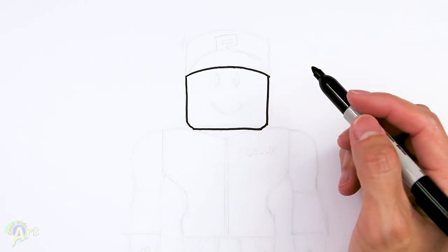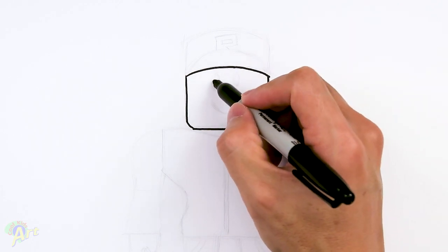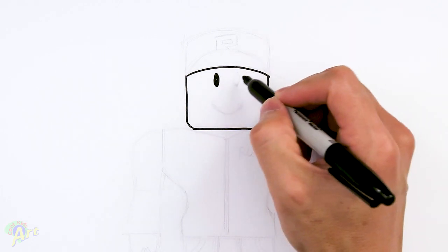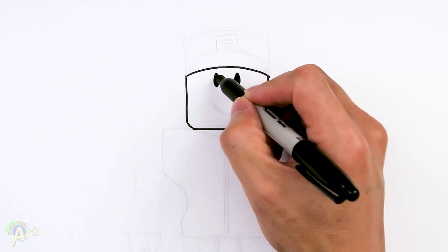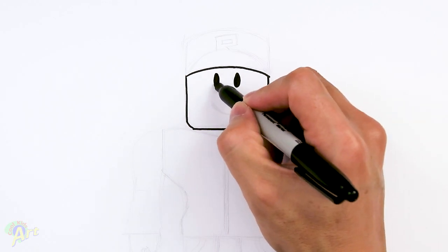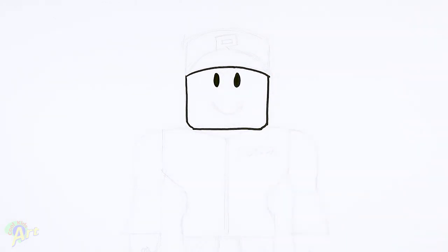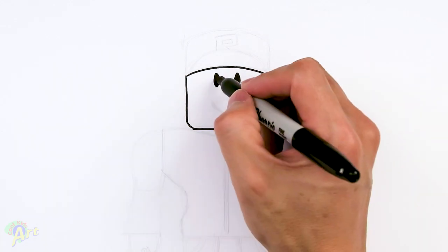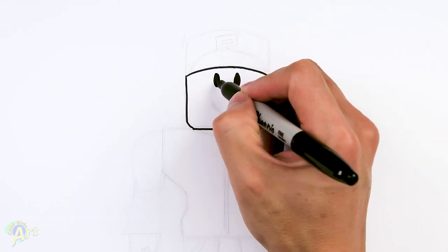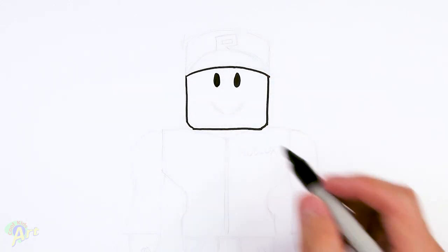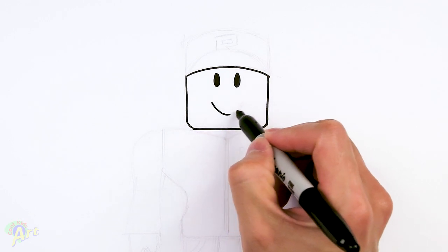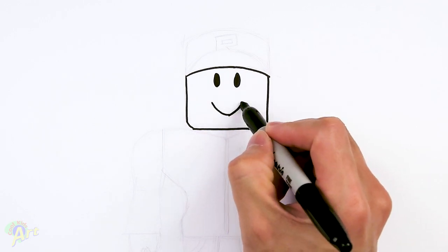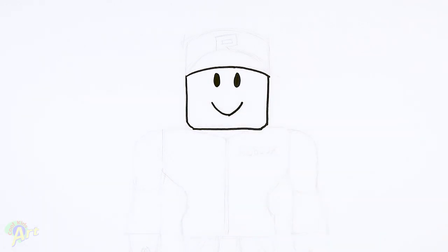Once we have that, let's finish up the face. We're going to come in and draw two eyes — they're kind of small and a little bit elongated. Then let's come down to draw his mouth; it's really simple. Let's draw a curve right underneath.